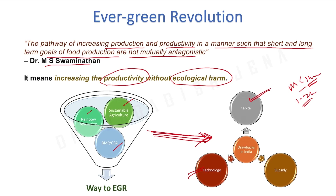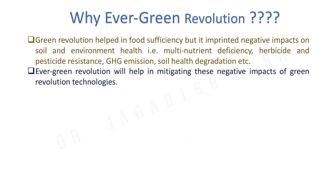Why is the Evergreen Revolution needed? The Green Revolution of the early 1970s had many negative impacts. High-yielding varieties were fertilizer-responsive, so we started using more and more fertilizer. We also started using more irrigation, drawing from groundwater, causing major groundwater depletion. These three things — high-yielding varieties, fertilizers, and irrigation — drove the Green Revolution era and increased food grain production many times over, but with serious negative consequences.